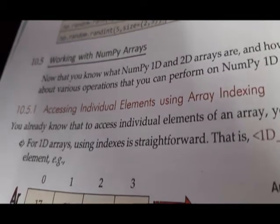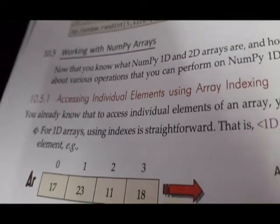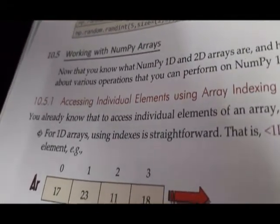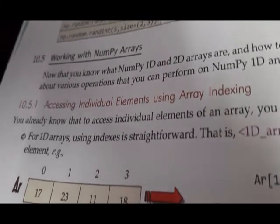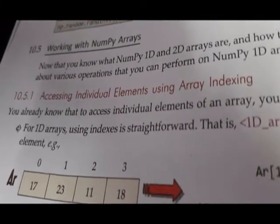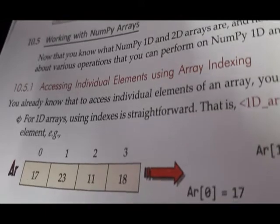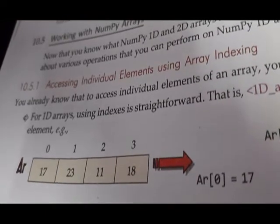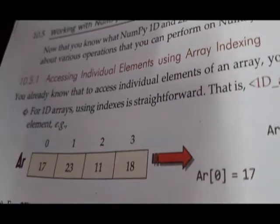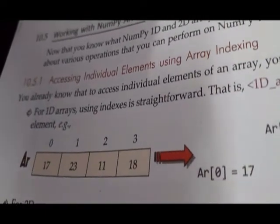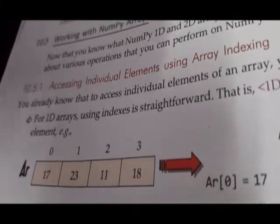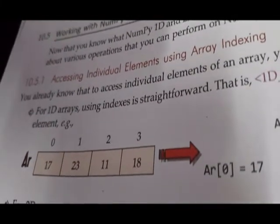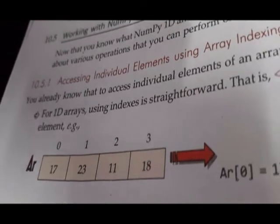Dear students, now we will see the next topic: working with NumPy arrays. The first one is accessing individual elements using array indexing. You know that indexing begins from 0 and it goes up to the number of elements minus 1 — that is the last subscript. Because there are 4 elements, the last subscript is going to be 3.